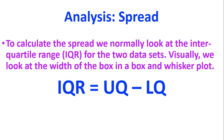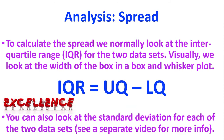We want to compare the spread of our two groups, so we normally would look at the interquartile range. Just a reminder: the interquartile range equals the upper quartile take away the lower quartile — it's how spread out the box is in our box and whisker plot. At excellence level, we also want to be able to look at the standard deviation for each of the two groups, and there's a separate video for more information about what a standard deviation is.